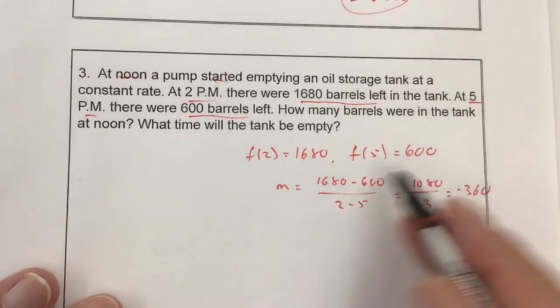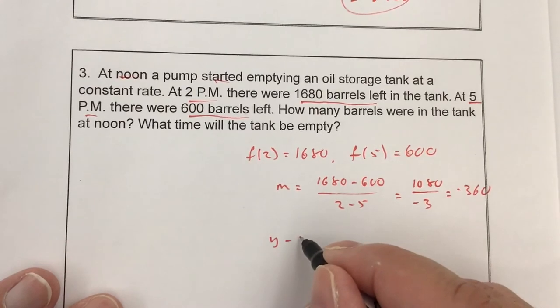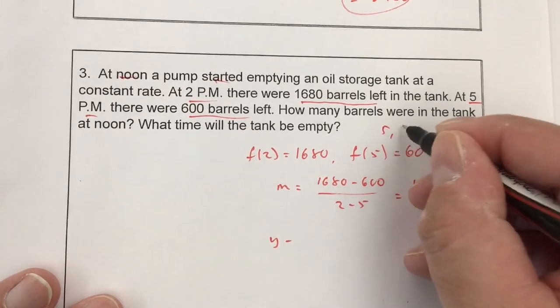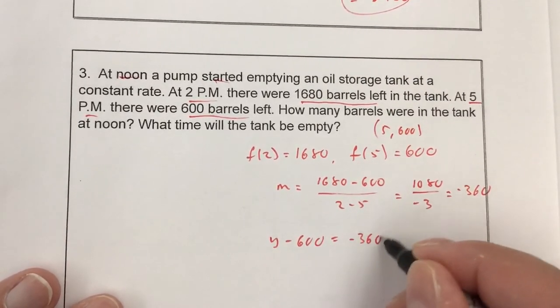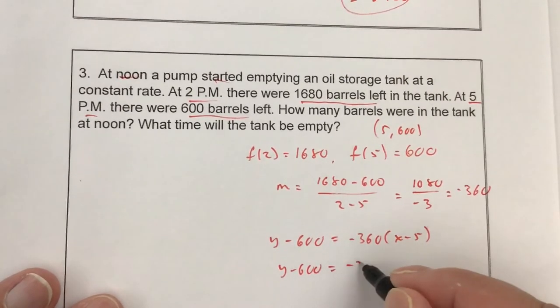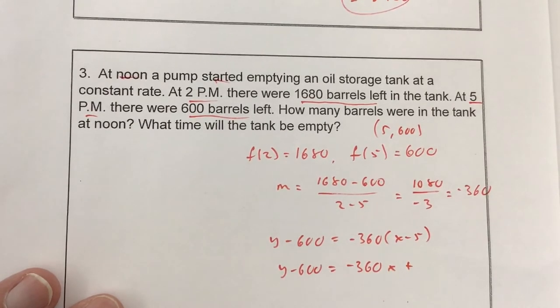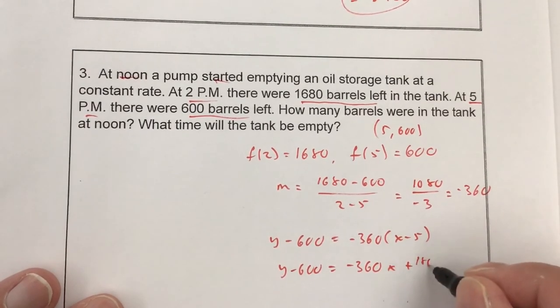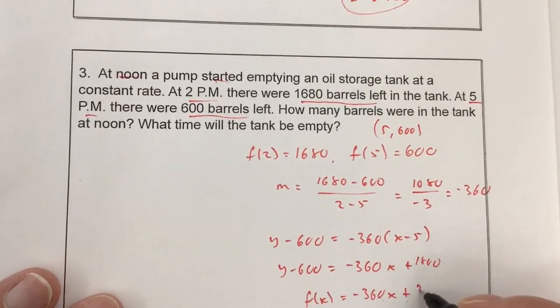I can pick one of these points. I'll pick the second one here. So y minus, remember this is (5, 600). y minus 600 equals negative 360 times x minus 5. y minus 600 equals negative 360x plus 1,400.